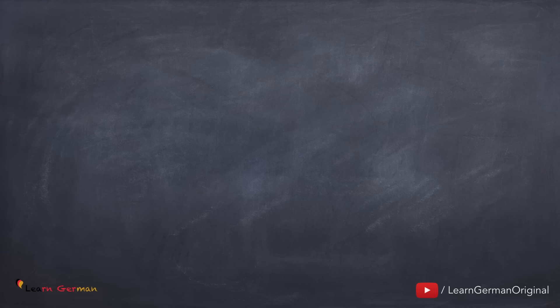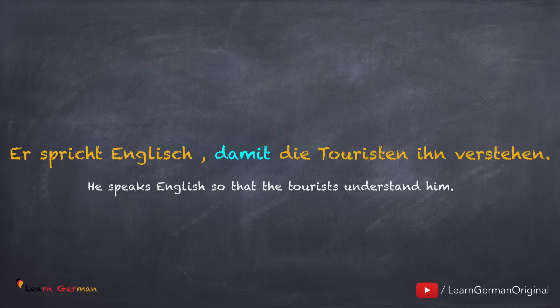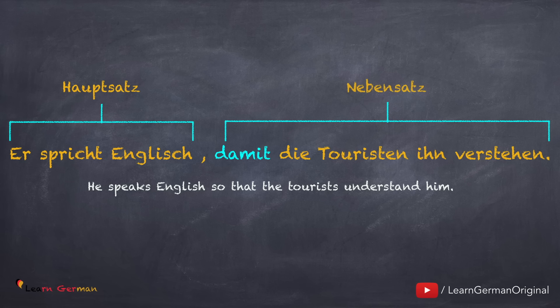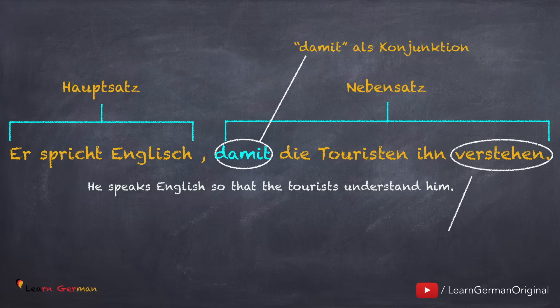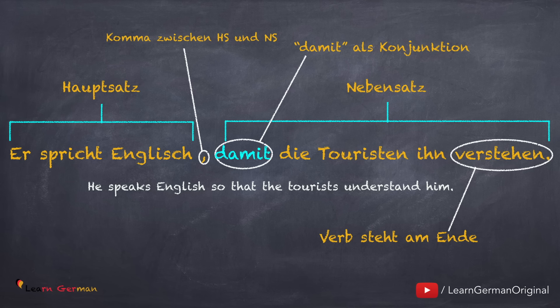Wir analysieren jetzt diesen Satz. Er spricht Englisch, damit die Touristen ihn verstehen. Er spricht Englisch ist der Hauptsatz. Die Konjunktion damit steht zwischen beiden Sätzen. In dem Nebensatz steht das Verb am Ende, und es steht ein Komma zwischen Hauptsatz und Nebensatz. Die Formulierung ist ähnlich zu den Formulierungen mit weil, da, indem, etc. The construction of sentences with damit is the same as for other conjunctions such as weil, da, indem, etc.